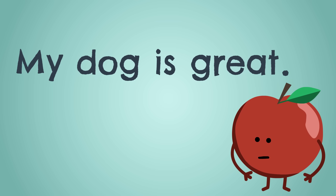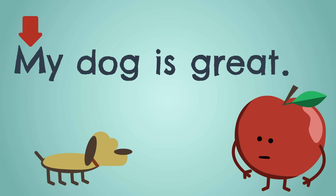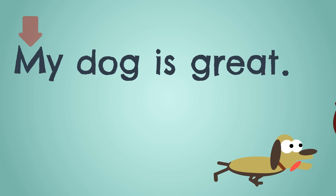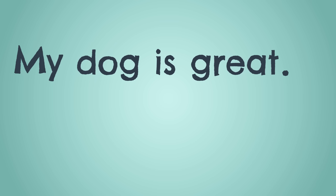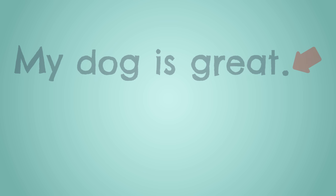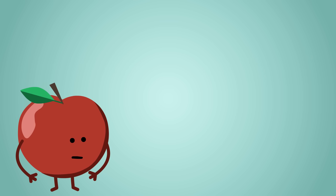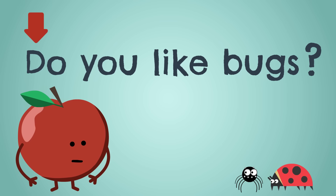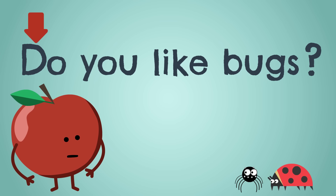"My dog is great" is a sentence — the M is a capital, yeah, that's right. "My dog is great" is a sentence. It ends with a period, that's right.